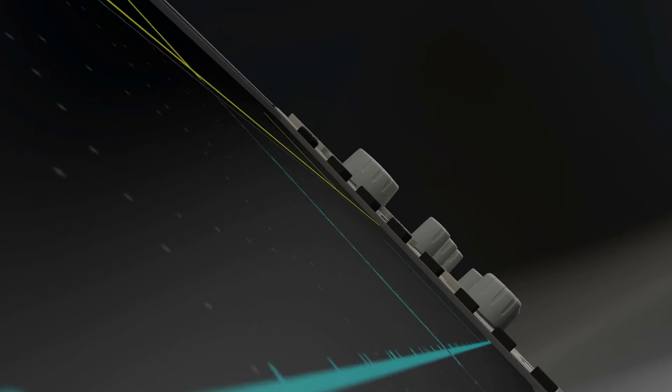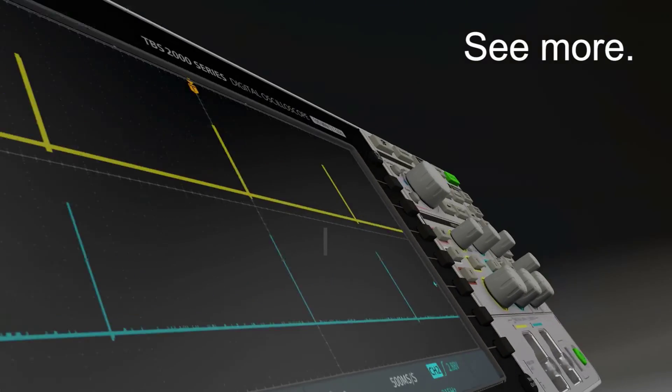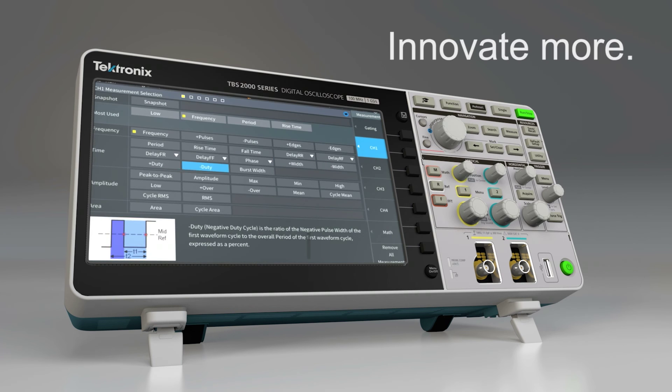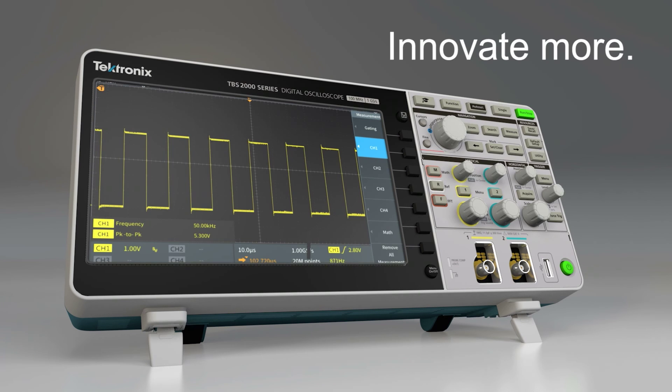The TBS 2000 series. See more with a bigger display and longer record length. Measure more with handy cursors and powerful automatic measurements. All designed to help you innovate more.